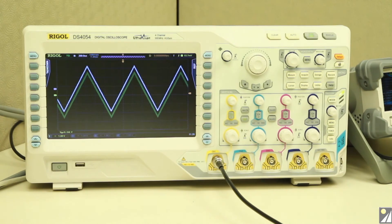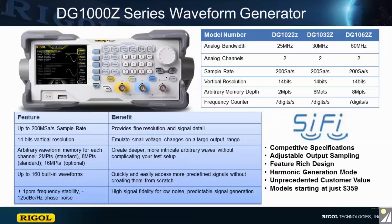Here we pulled 1,400 points from the DS4000 oscilloscope and reproduced the signal on our waveform generator. But this waveform generator is capable of producing millions of points to create more complex waveforms while using SiFi technology to produce signal fidelity. To learn more about SiFi technology, please take a look at the application note on our website. This product is a great value for the price — it starts at $359 and comes with 25 megahertz along with 160 different functions built in. If you want to learn more, please check out our website or give us a call. Thank you.